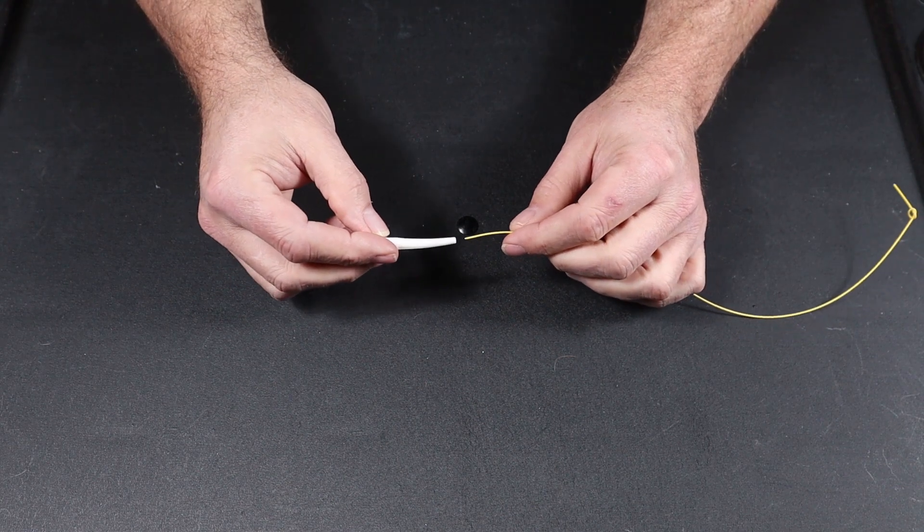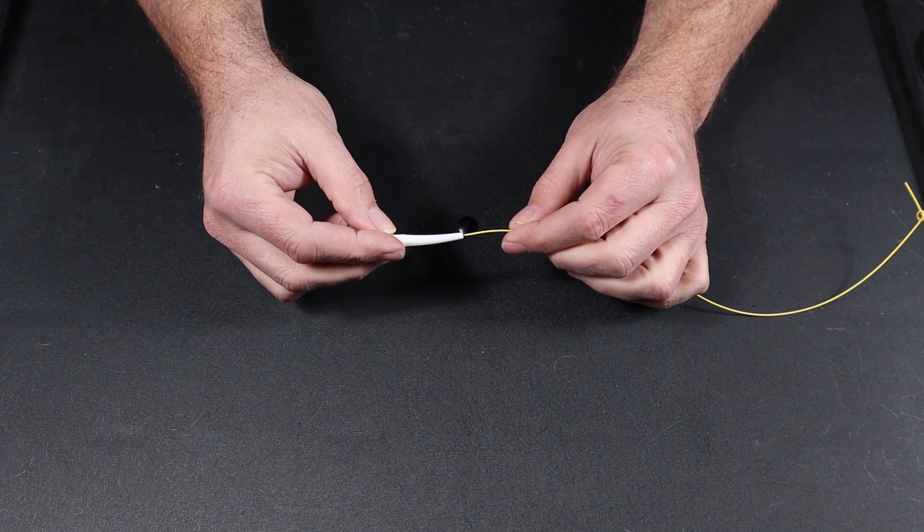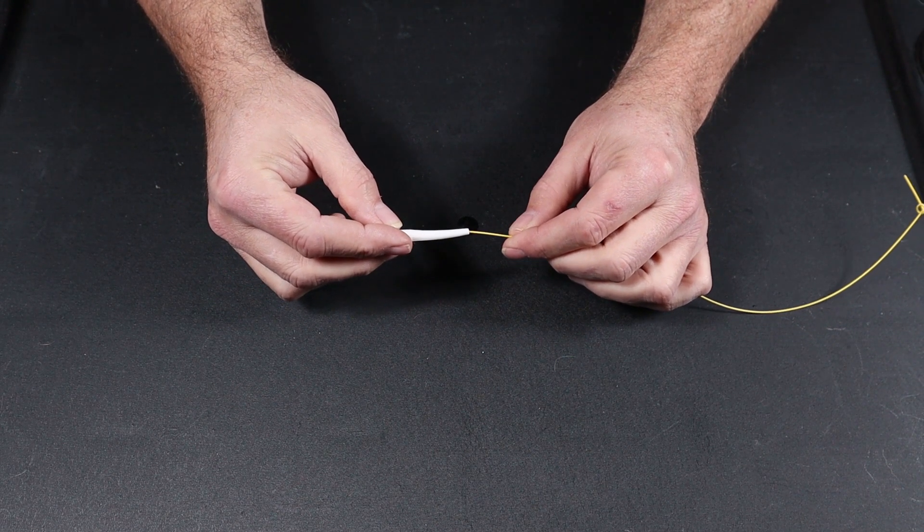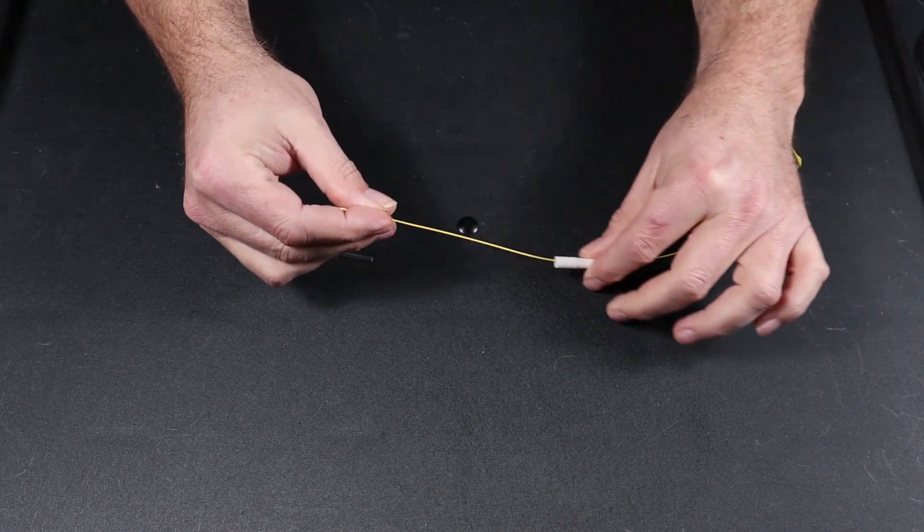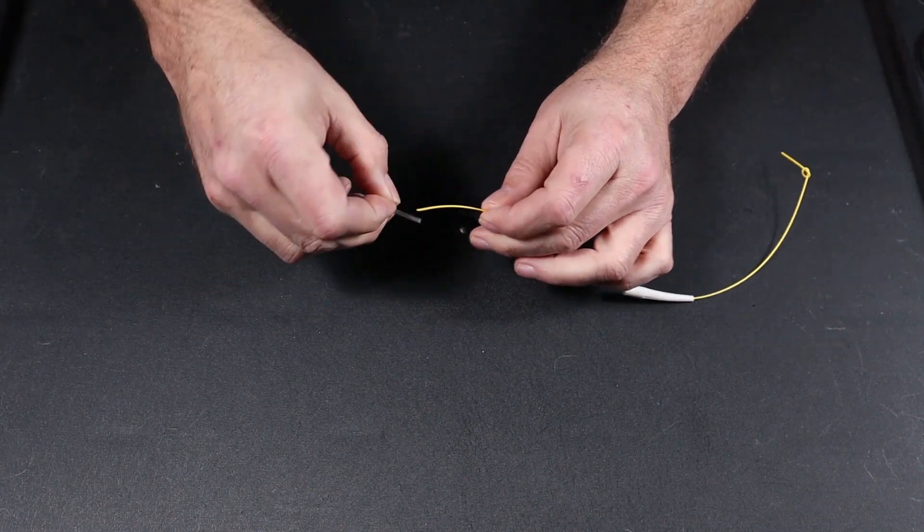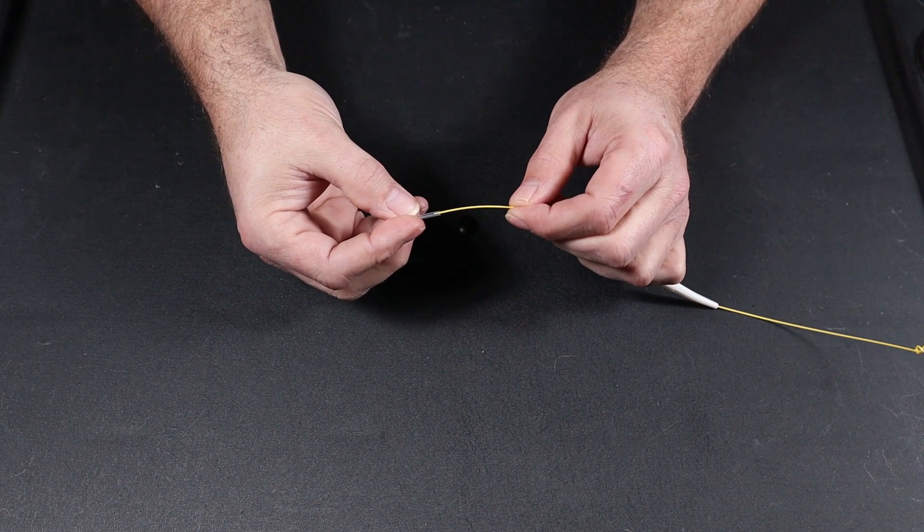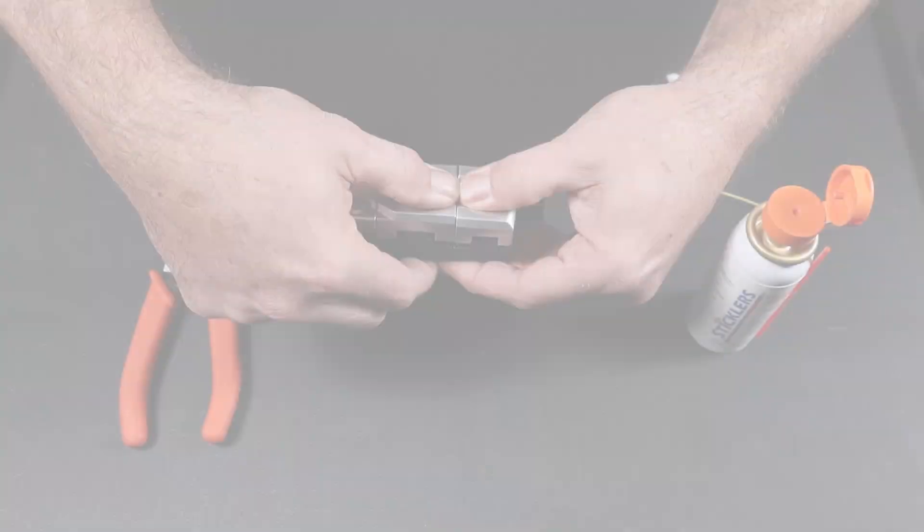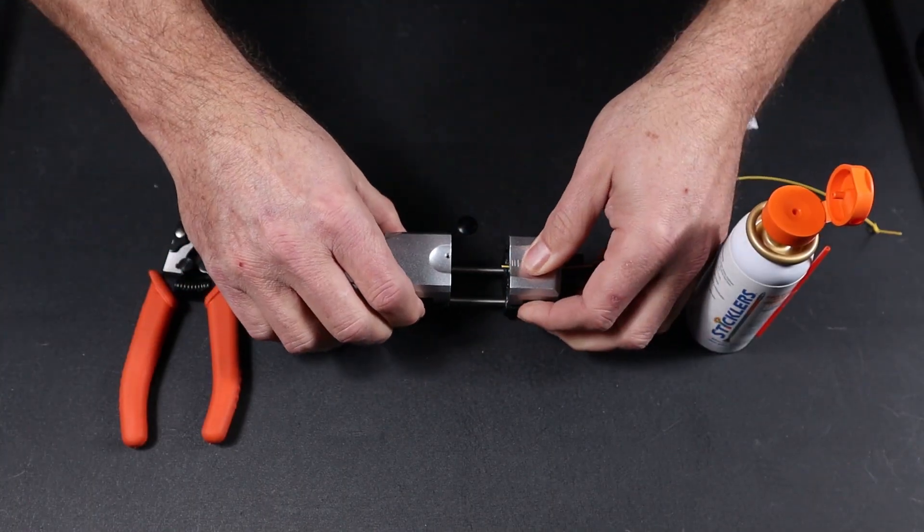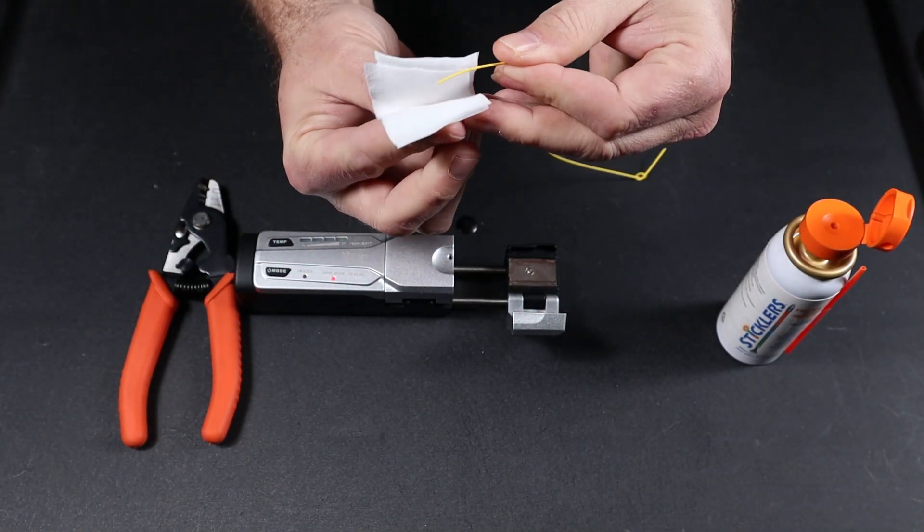Now let's prepare our fiber for a splice on connector. First, take your 900 micron back boot, place it on your fiber. And your shrink tube. Now prepare your inbound fiber. Strip, clean, and cleave the fiber.